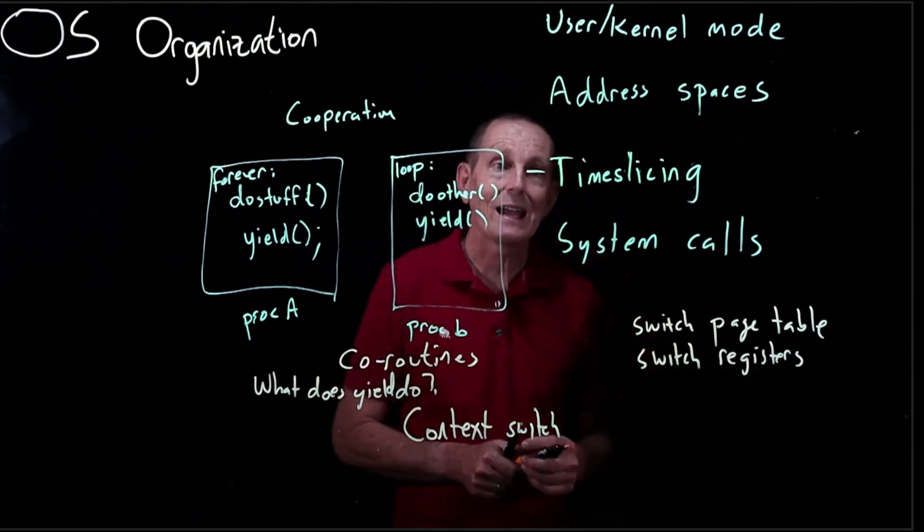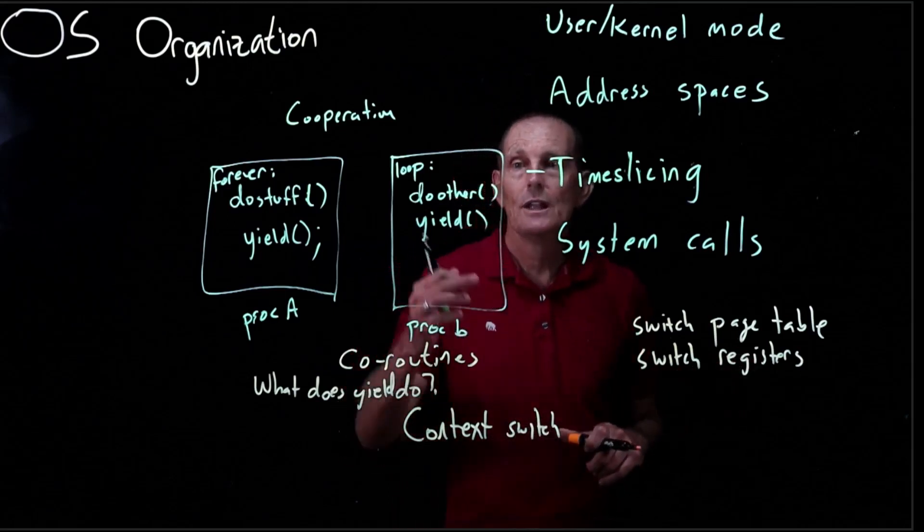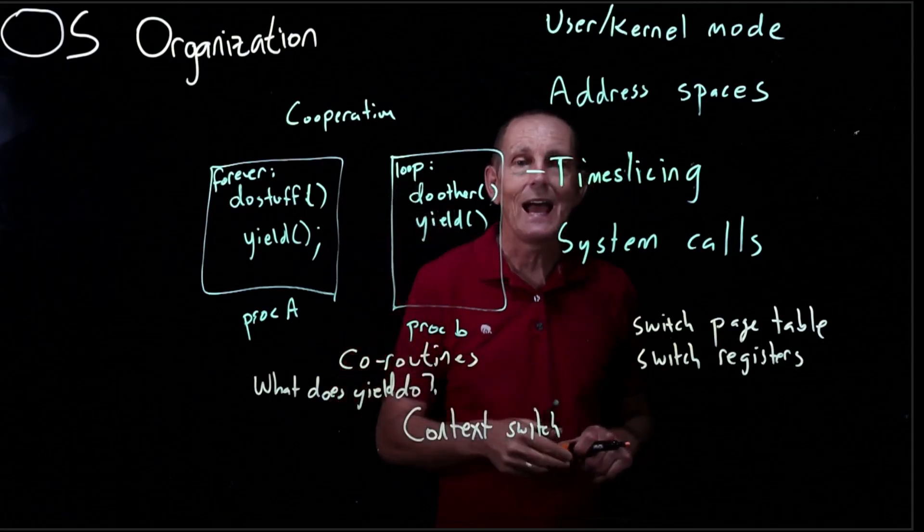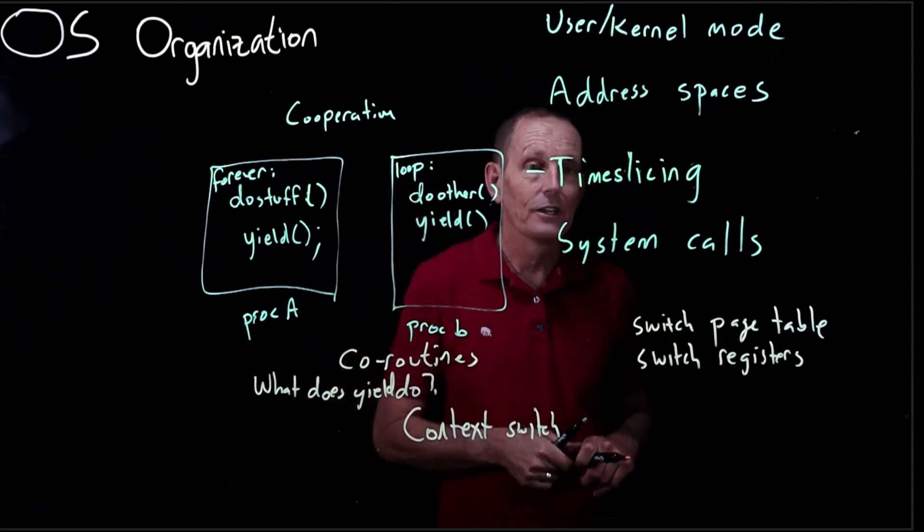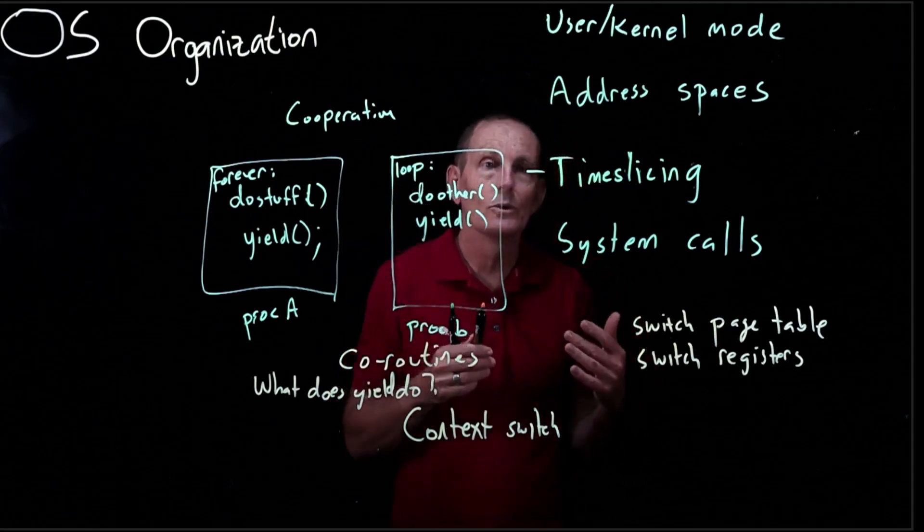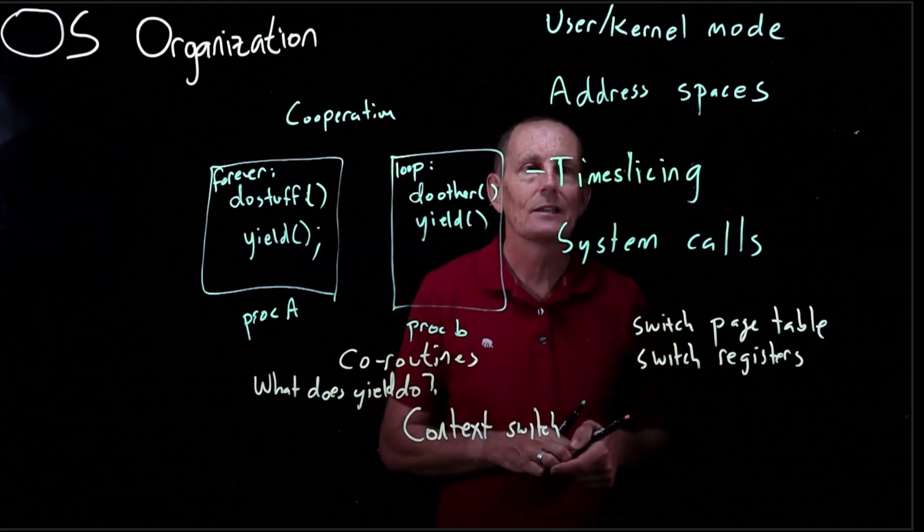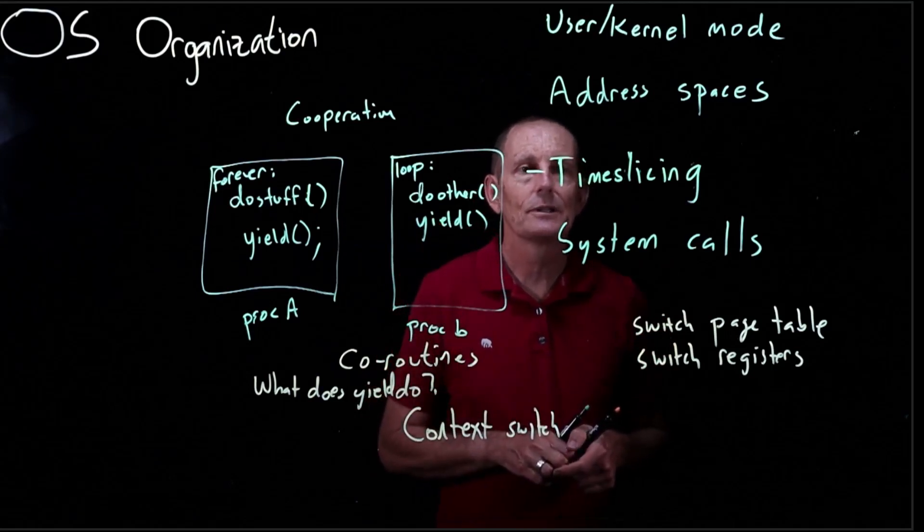Okay our registers are going to get us back to the code where we were. That is back to executing here. The stack is going to be taking us to the right place. All the other registers will restore to the values that they have. So that's basically what yield is going to be doing.